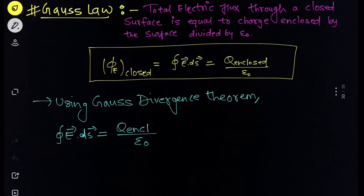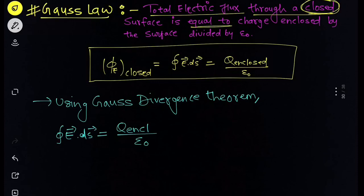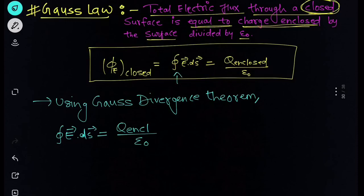Now what is Gauss's law? Gauss's law represents a relationship between electric charge and electric field — if we have some charge distribution, we can calculate the electric field using Gauss's law. It states that the total electric flux through a closed surface — remember we need a closed, packed surface — equals the charge enclosed by that surface divided by ε₀, the permittivity of free space. We write this as the closed surface integral of E · dS = Q_enclosed / ε₀.